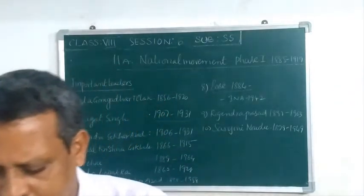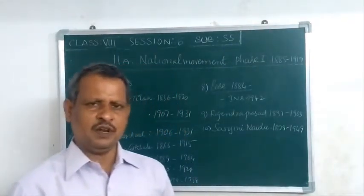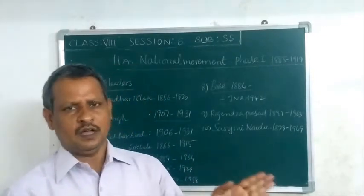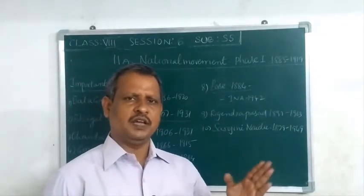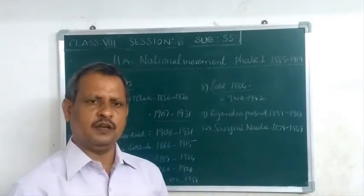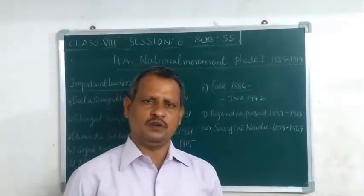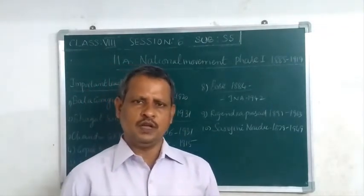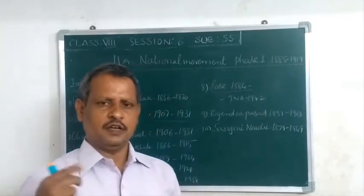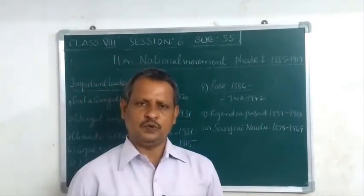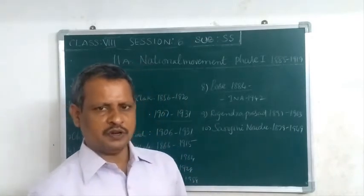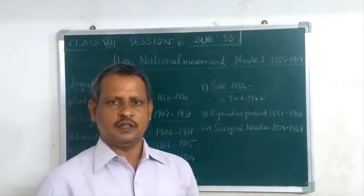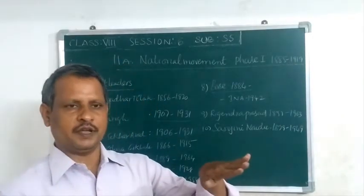In the first phase of the national movement, from 1885 to 1919, early associations were formed. The East India Association was started by Dadabhai Naoroji in 1866 in London. He propagated that under British rule, India's raw materials were being exploited — exported to England, manufactured into goods, and then imported back and sold cheaply, causing a decline in Indian production.